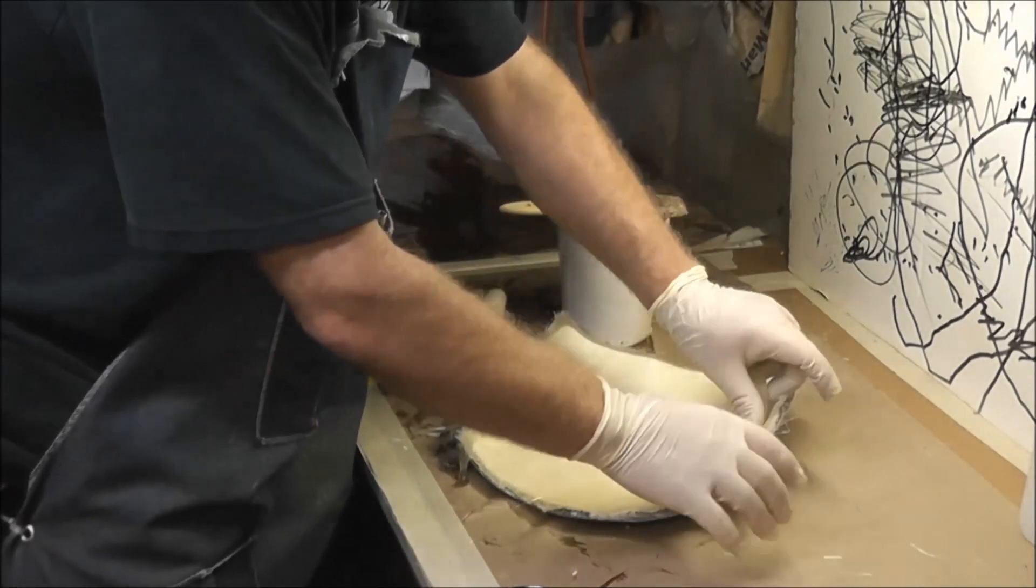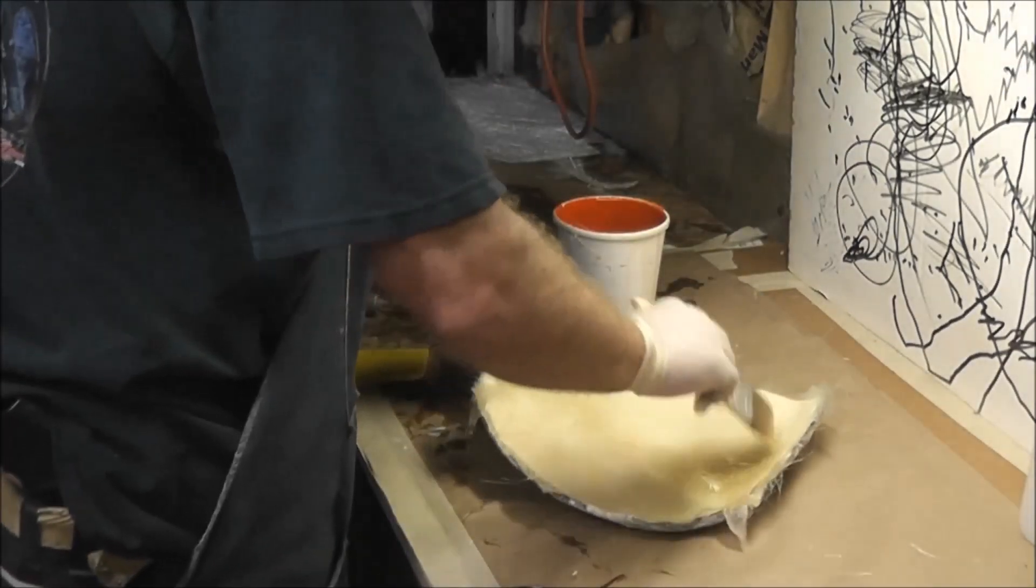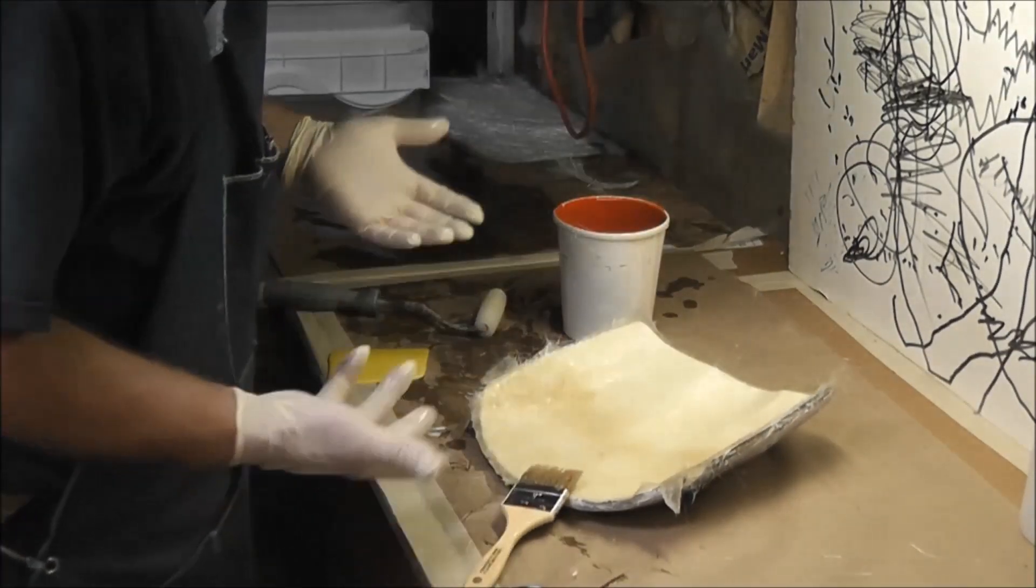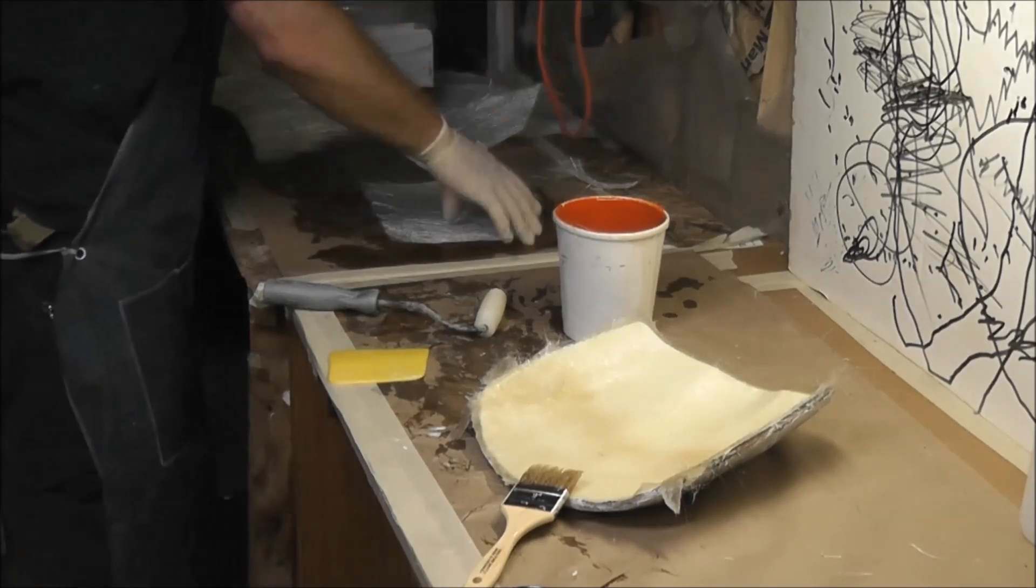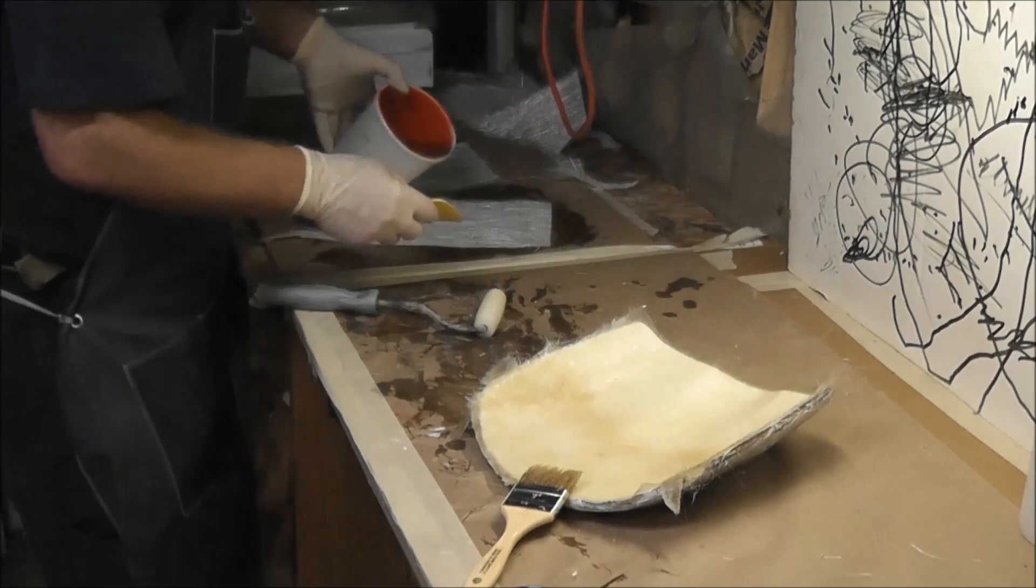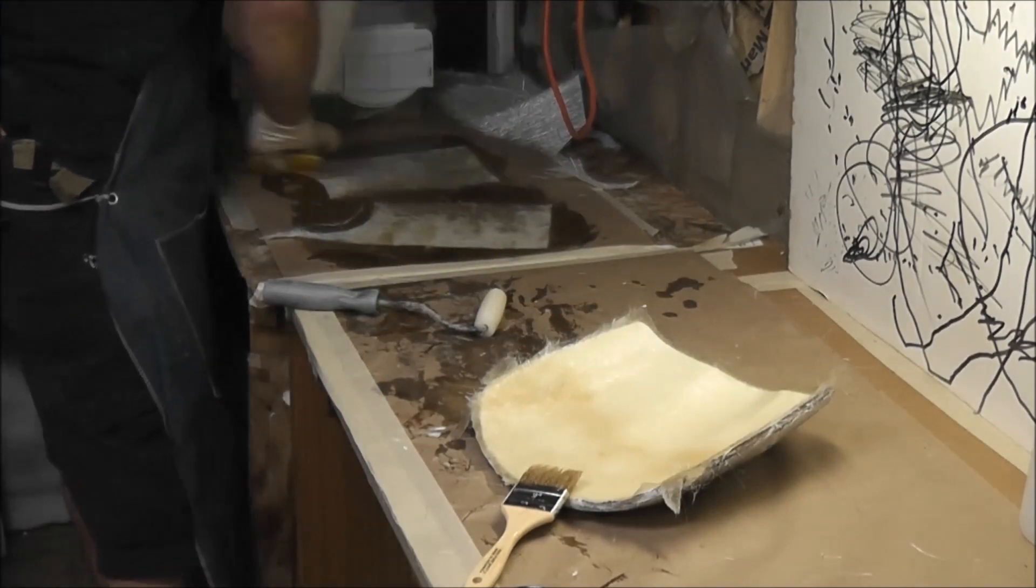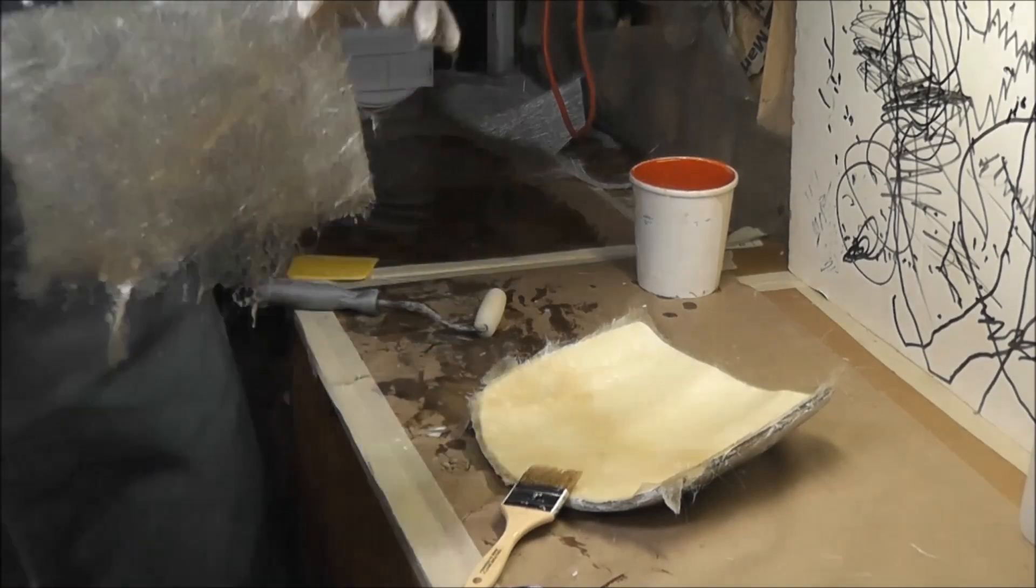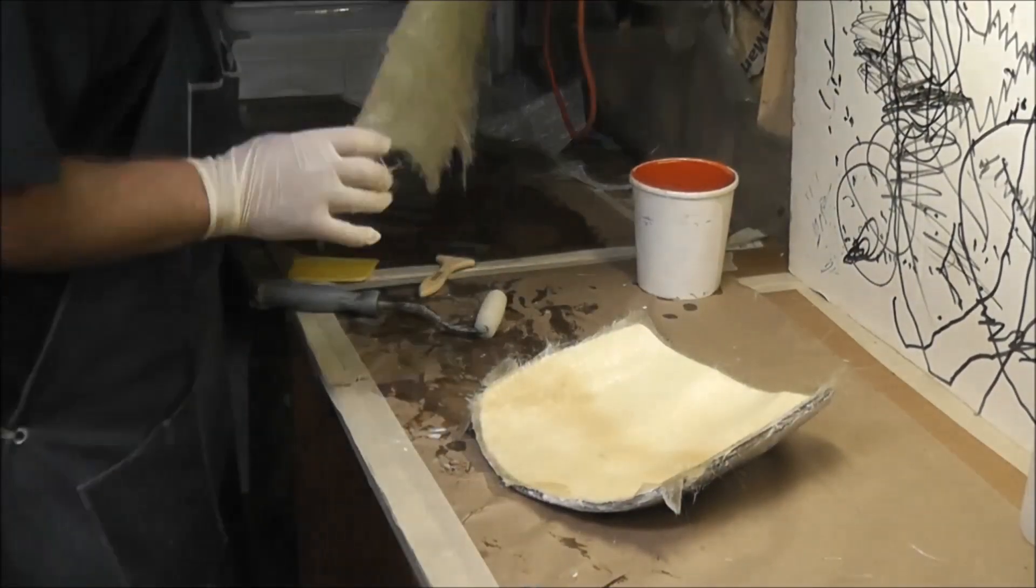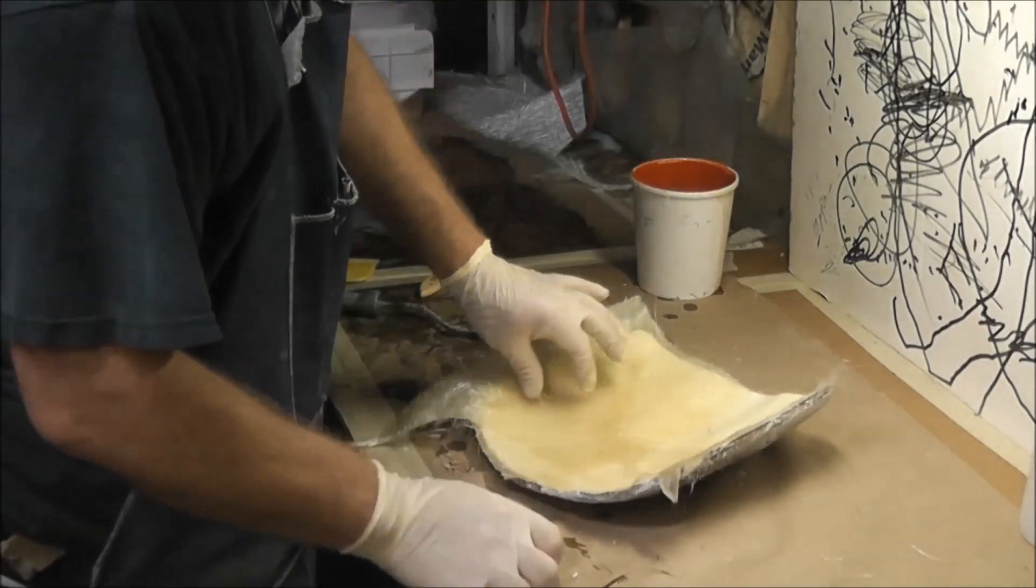You can scrape your brush on the edge of your cup there, getting the resin out of the brush bristles, and then dab on those really wet parts of your fiberglass there. The brush will suck up that extra resin, and then scrape it on the rim of your cup again and just keep doing that until you pull the extra resin out.